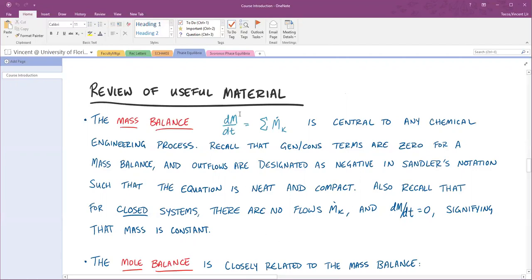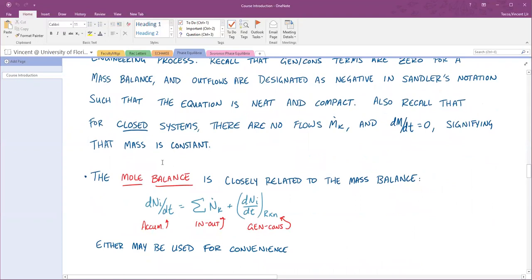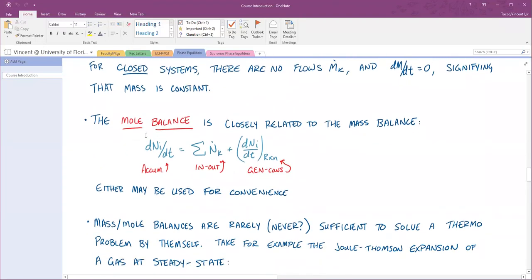In a steady state process, no variables are changing with time, not even temperature or pressure. So the dm/dt term goes to zero. In that case, the sum of all the inflows and outflows should be equal. That's a slightly more interesting situation, but in a lot of these thermodynamic problems we rarely have more than one inflow or outflow of mass.